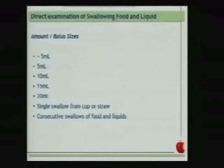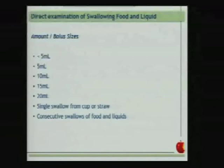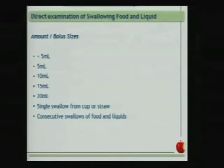Consistency alone is not enough; we must also measure bolus size. If the patient has poor pulmonary clearance, we start the assessment with less than 5 milliliters. If successful, we progress to 5 milliliters, then 10, 15, and 20 milliliters. We can then ask the patient to take a single swallow from a cup or straw, and if successful, progress to consecutive swallows of food and liquids, and assess the patient during their own normal meal if possible.